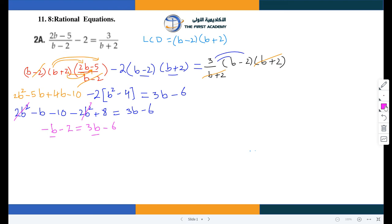Now I'll bring B towards one side, the numbers with variable towards one side—the left side—the numbers without variable towards the right side. So negative B minus 3B equals negative 6 plus 2. Negative 4B equals negative 4. Dividing both sides by negative 4, B equals 1, which is our final solution.